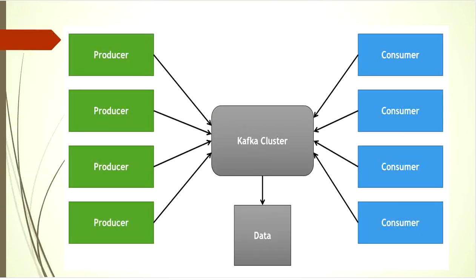In the previous video we created a simple Java example that creates a Kafka producer. We also created a replicated Kafka topic called 'my topic'. Then we used a Kafka producer to send the records to the Kafka topic. Now the consumer will be created to consume those messages produced by the Kafka producer. So okay, let's get started.